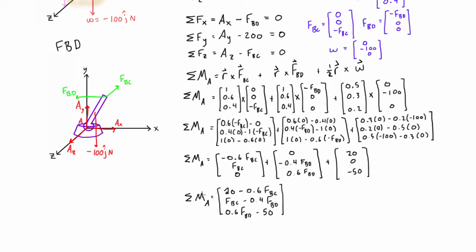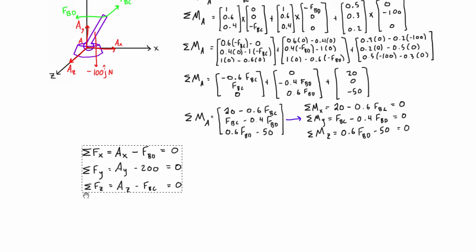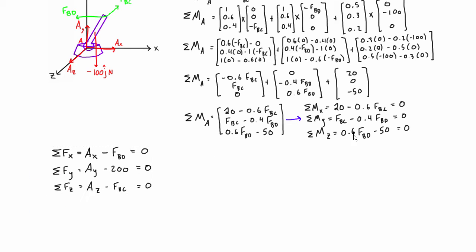And this single equation for the sum of moments about A can be broken back out into its individual components for x, y, and z. So all I did here basically is I just grabbed this line and set it to 0 as the equation for the sum of moments about the x-axis because this is the x component, this line becomes the sum of moments about the y-axis, and this third line becomes the sum of moments about the z-axis. So just to summarize what we have, what we found here now, I'll just bring this down so we don't lose it.